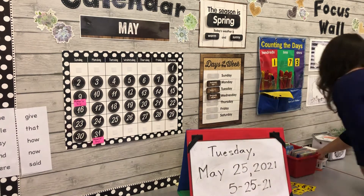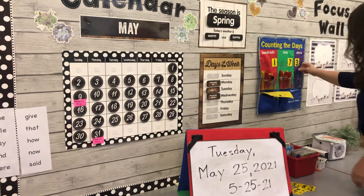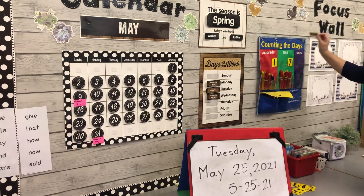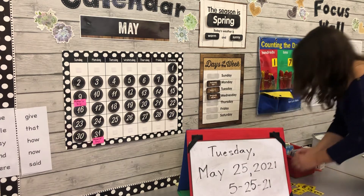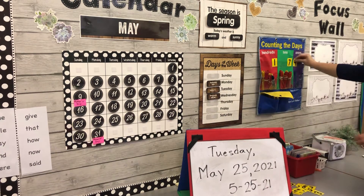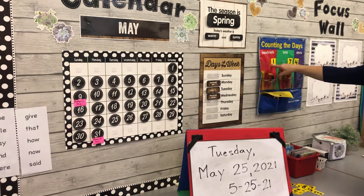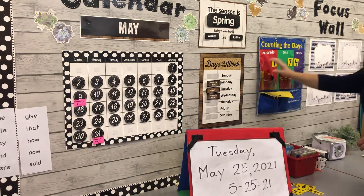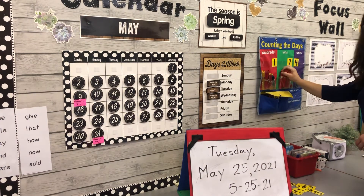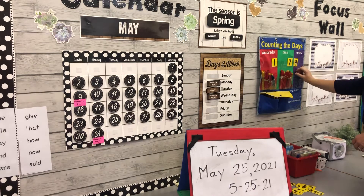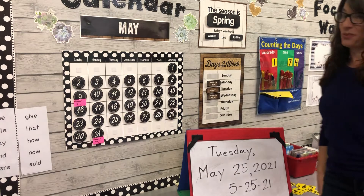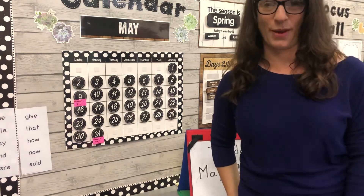We've been in school for another day, so I'll put another stick in for today. That's one, two, three, four in the ones place. Seven in the tens place, and one hundred. So we've got one group of a hundred — that's a hundred. Seven tens, seventy. And four ones, four. One hundred and seventy-four days in school. Wow.